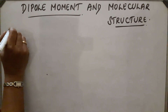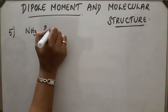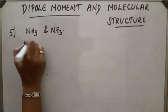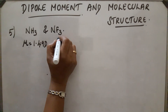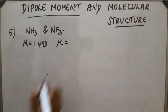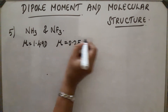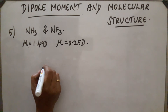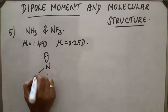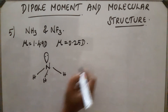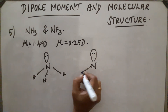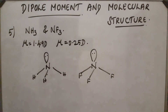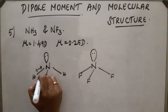Now let us compare the two molecules NH₃ and NF₃. Both have pyramidal structure, but their dipole moments are different. The mu for NH₃ is found to be 1.49 D, which is greater than NF₃. In the case of NF₃, mu is found to be 0.25 D, which is very small compared to NH₃. Let us draw the structures of both compounds. If we compare nitrogen and hydrogen, nitrogen is more electronegative and the electrons shift towards the nitrogen atom.